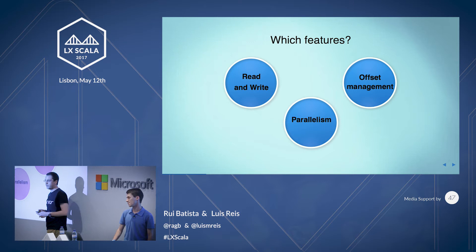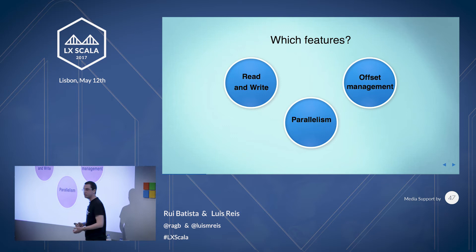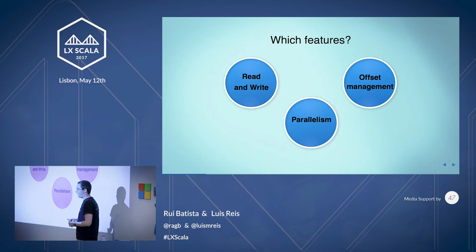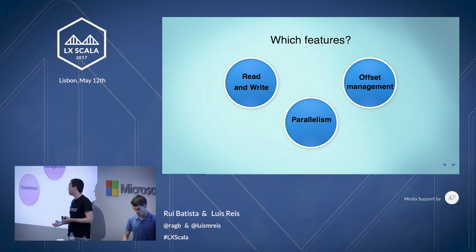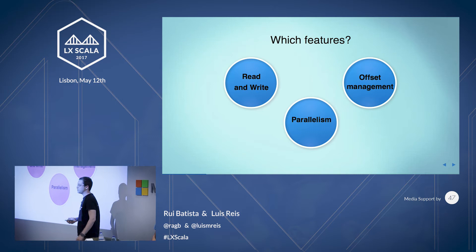We could talk about Kafka the whole day — there are entire conferences with three days just on Kafka. We don't have that much time, so we're going to talk about three main features that work well with streaming libraries: how to read and write from Kafka, how to handle offsets (telling Kafka where to start, marking messages processed), and parallelism — how to handle all those partitions using one or more consumers.